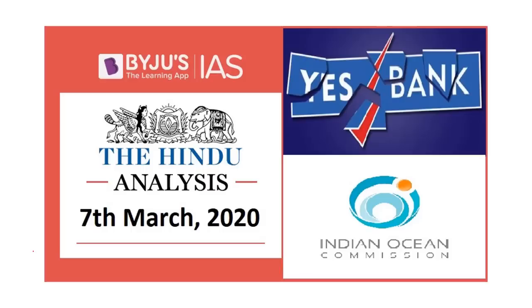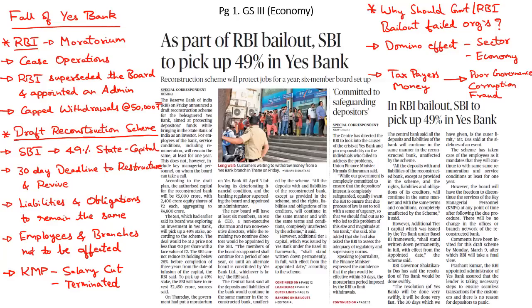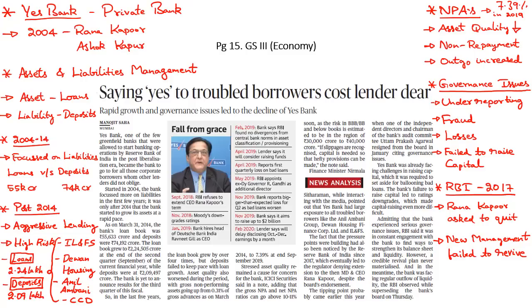Hello and welcome to Baiju's IAS. Let's take up the analysis of today's The Hindu newspaper. There are three articles in today's newspaper related to the collapse of Yes Bank and the reconstruction plan that RBI is trying to put in place. But before we get into this topic, first let us understand the factors behind the collapse of Yes Bank and why the Indian banking and financial sector is severely stressed.